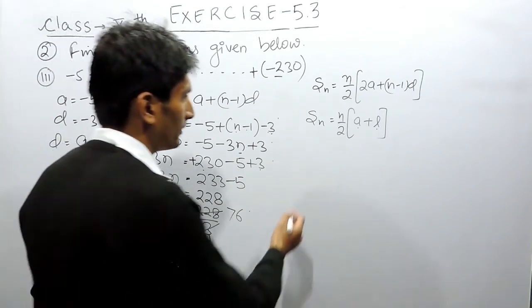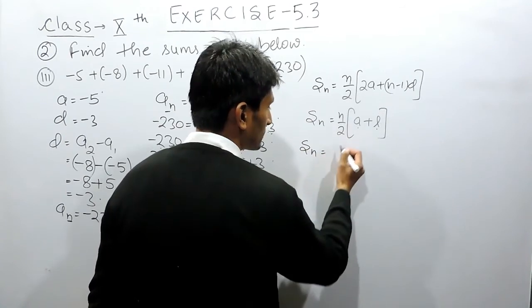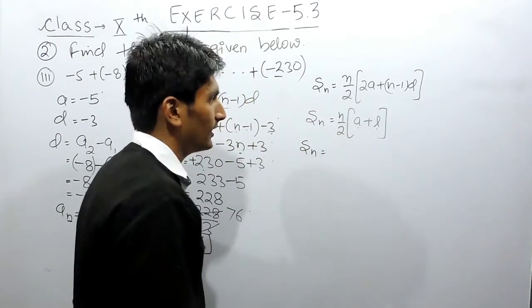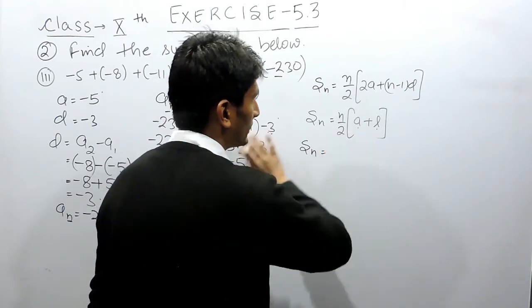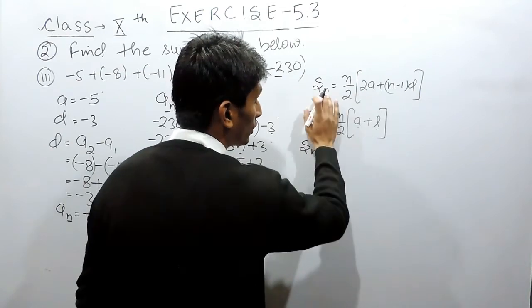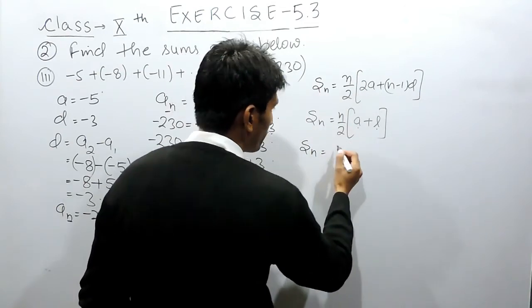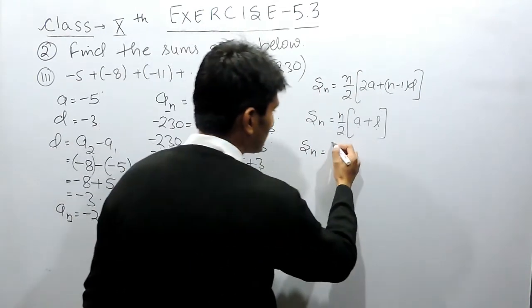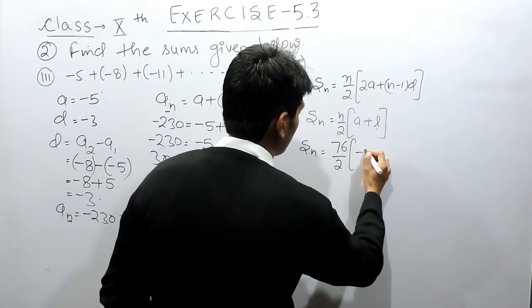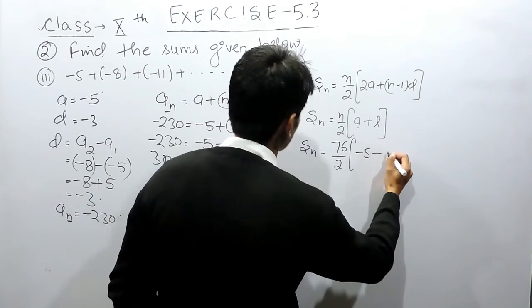Now we have to find the sum. I am using this formula instead of the other because this will make my calculation easier. You can substitute the same values in either formula and you will find the sum of n terms. So the number of terms here are 76 by 2. The first term is -5, and the last term is -230.